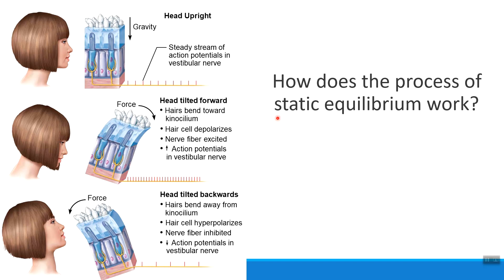So for static equilibrium, thing number one: this happens in the saccule and the utricle of the internal ear. Thing number two: we use hair cells that get bumped open or closed by otoliths to detect this sensation. Thing number three: know whether we're sending a slow and steady number of signals, a really high number of signals, or very few signals depending on head position — upright, forward, or backward.